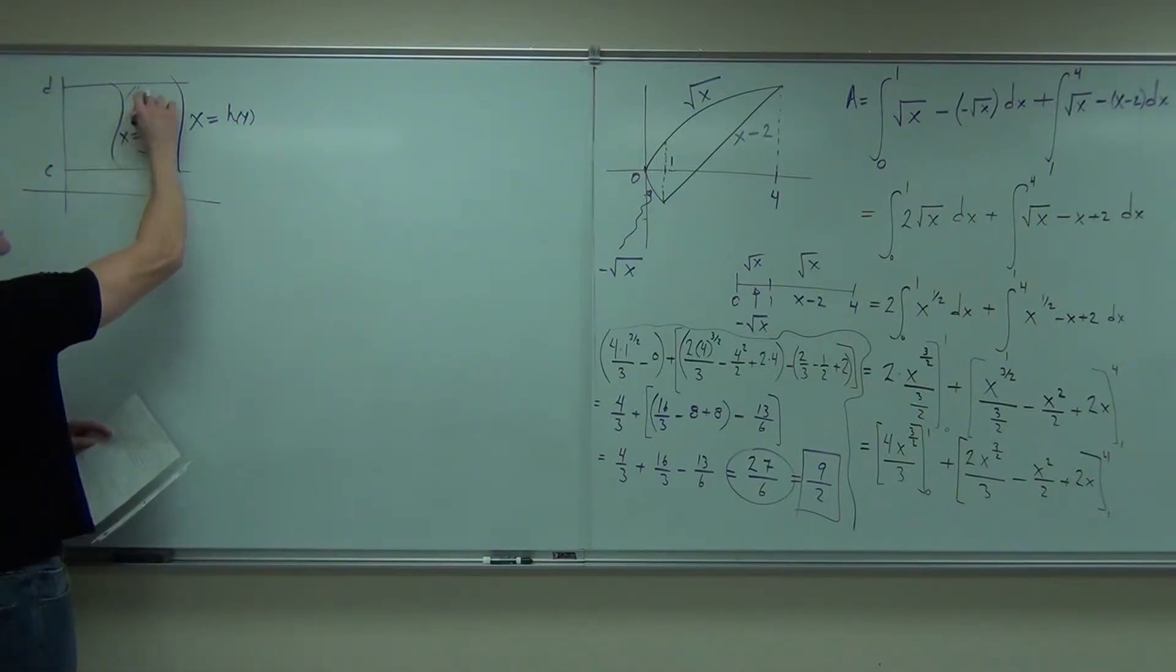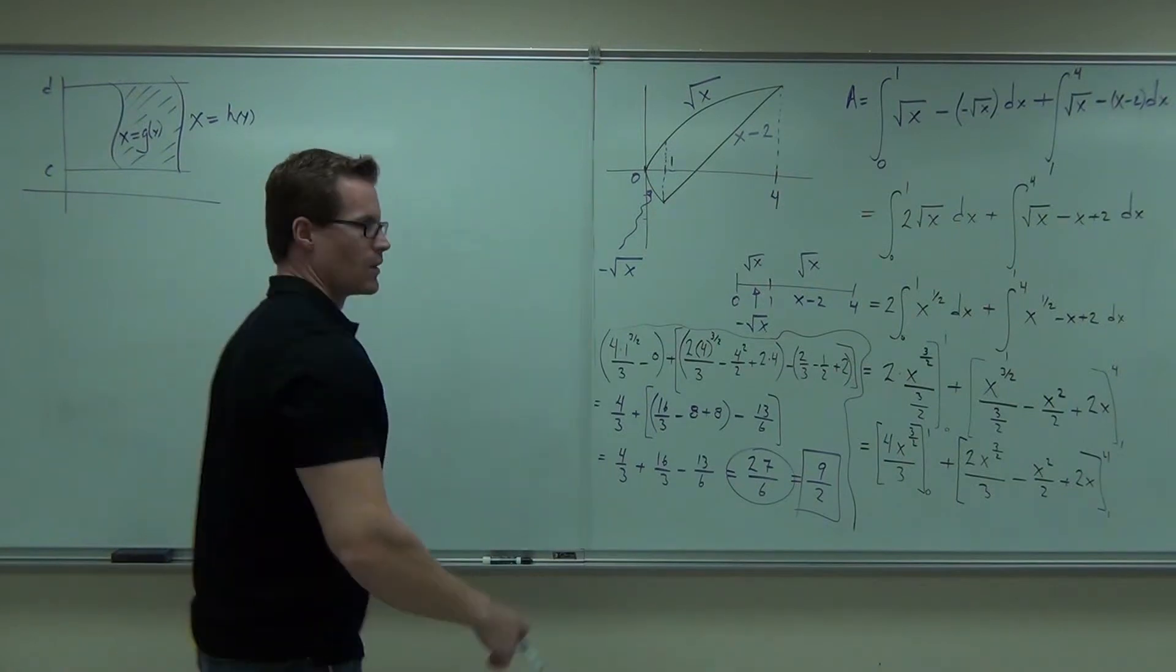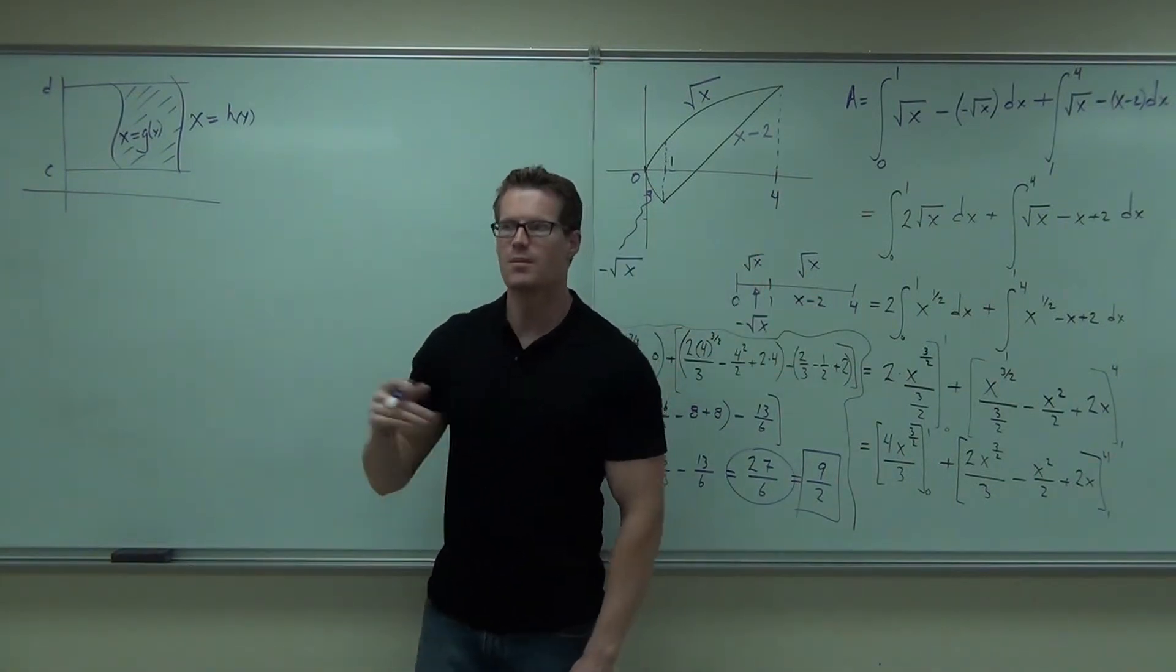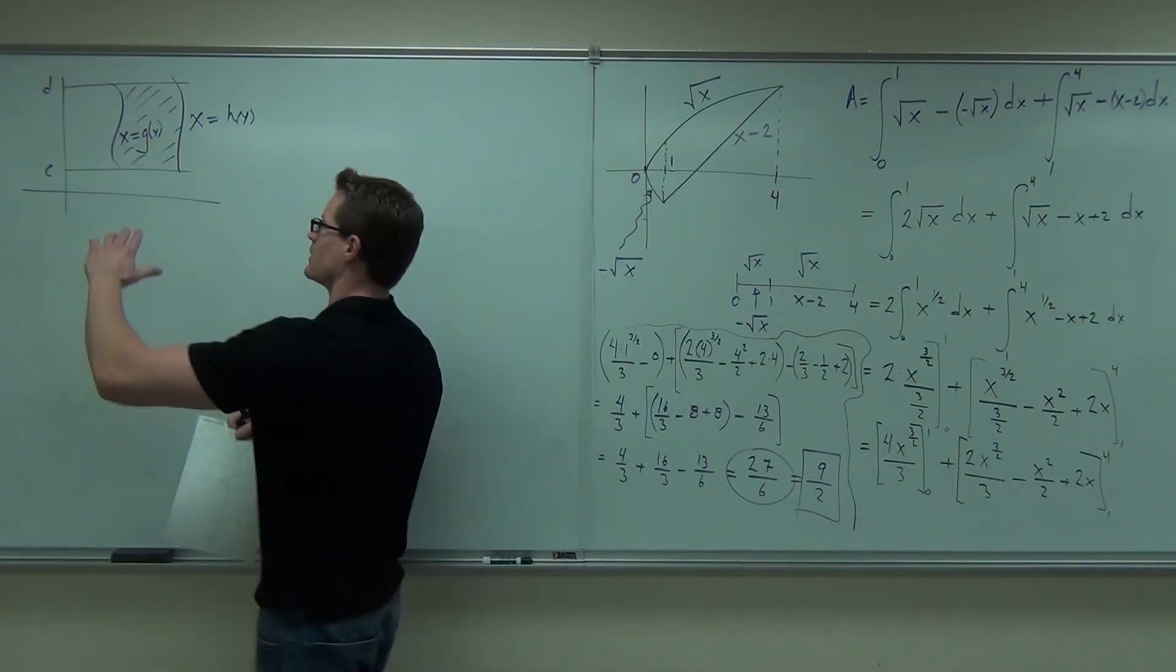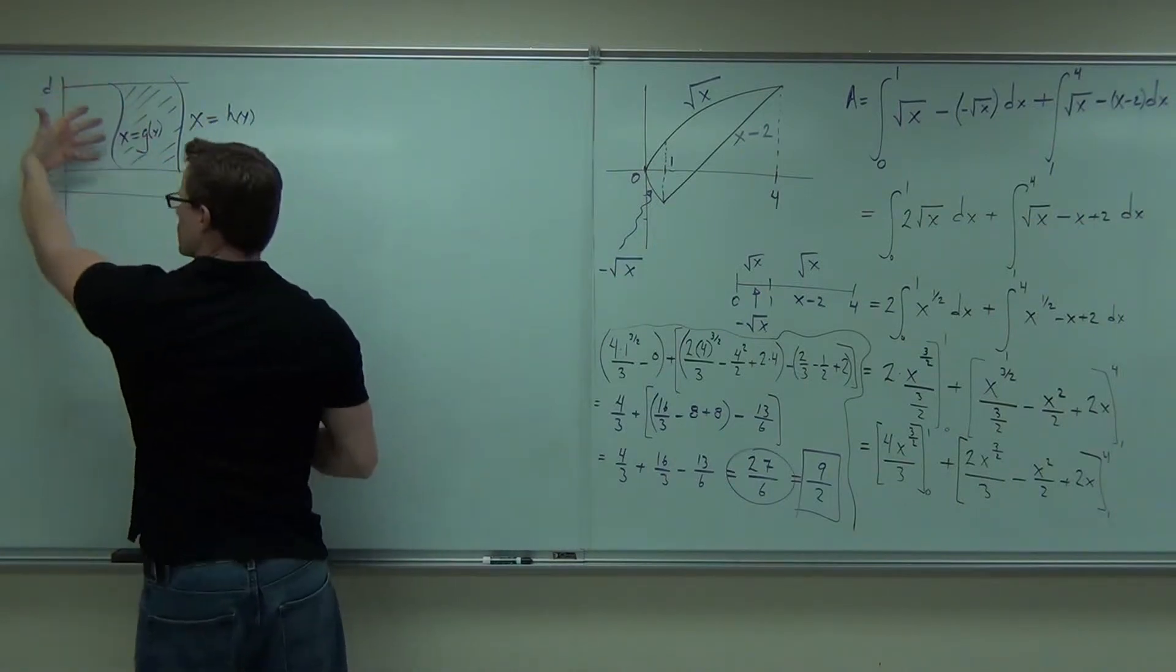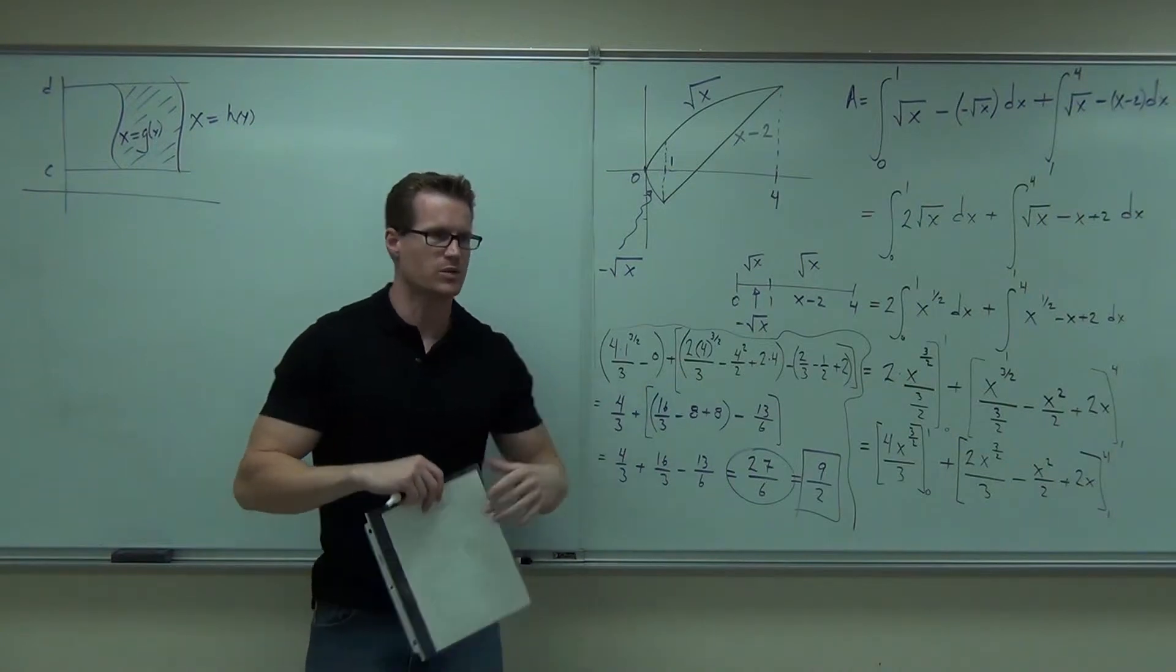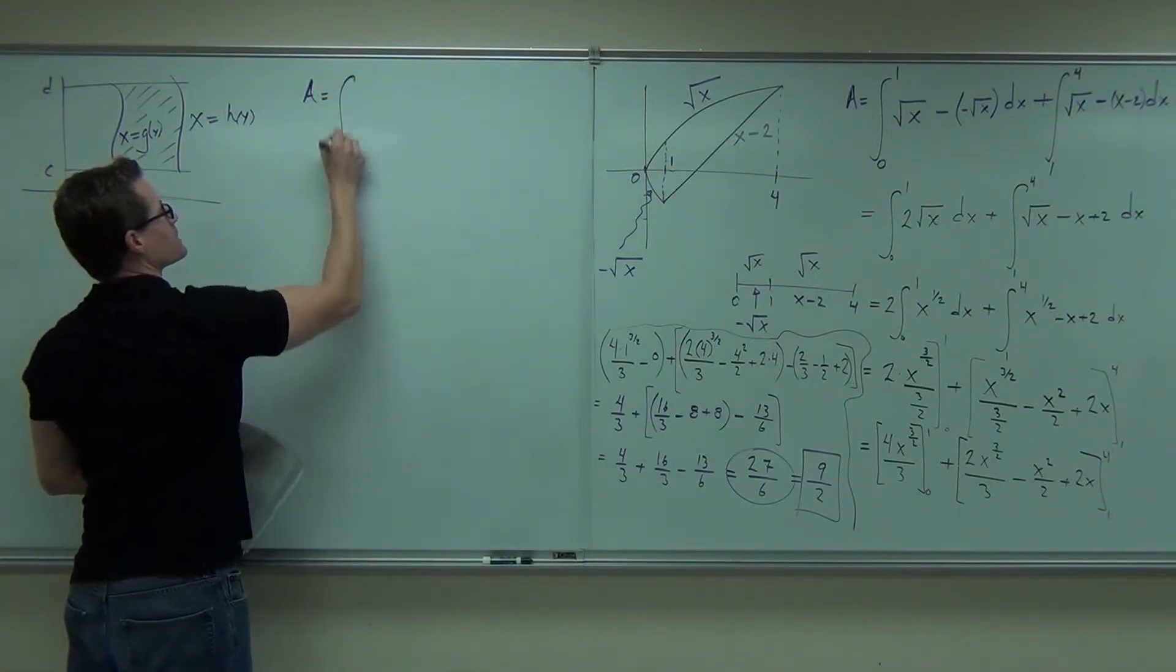And the area we're talking about is that area. Notice that if you put your head like this, right takes the place of top. Left takes the place of bottom. But we still go from c to d. It's basically like taking this picture and doing this with it. Like reflecting it across y. Almost. Is that g of y? Yes.